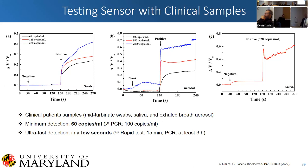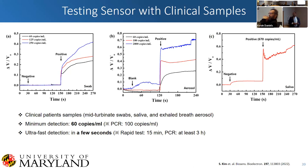We tested with clinical samples, partnering with Professor Don Milton and their STOP COVID project, who were testing people in the middle of the pandemic and looking at how the virus was being transmitted. They put people in boxes, had them sing and talk, and collected aerosol samples from them. We were lucky to partner with them and got swab, saliva, and breath samples. We're able to test all the way down to 60 copies per milliliter for our nasal swab and aerosol samples, leading to our minimum detection of 60 copies per milliliter — compared to traditional PCR that has 100 copies per milliliter — and all of this is happening in one second to a few seconds.